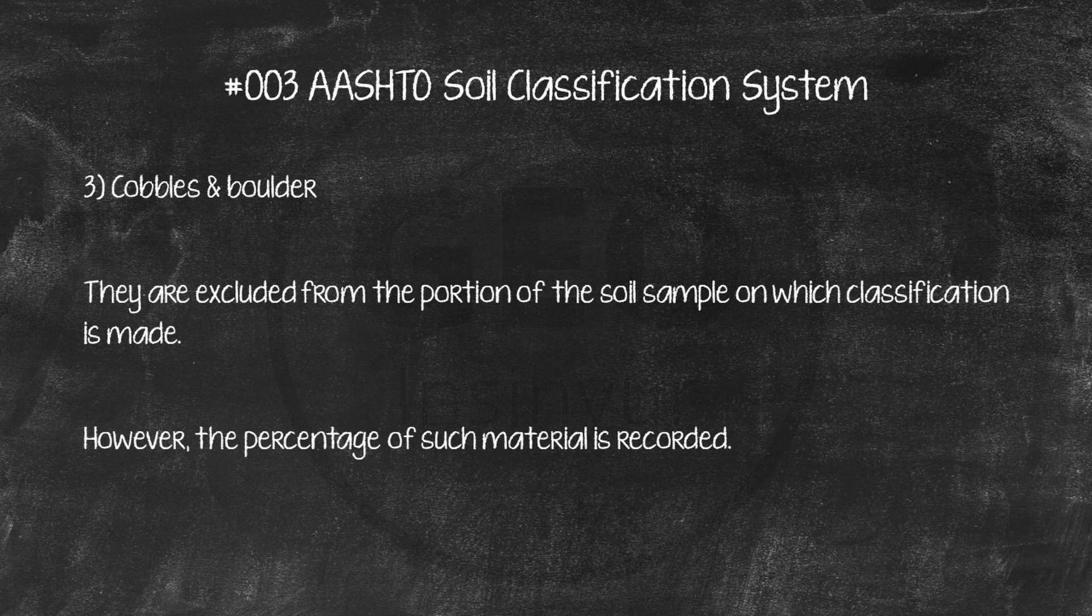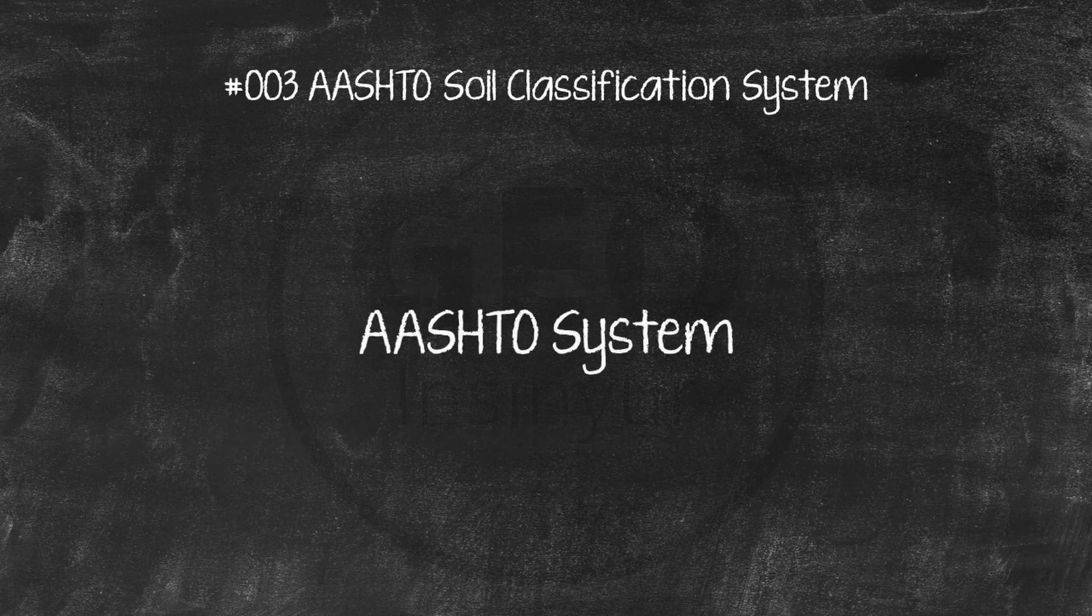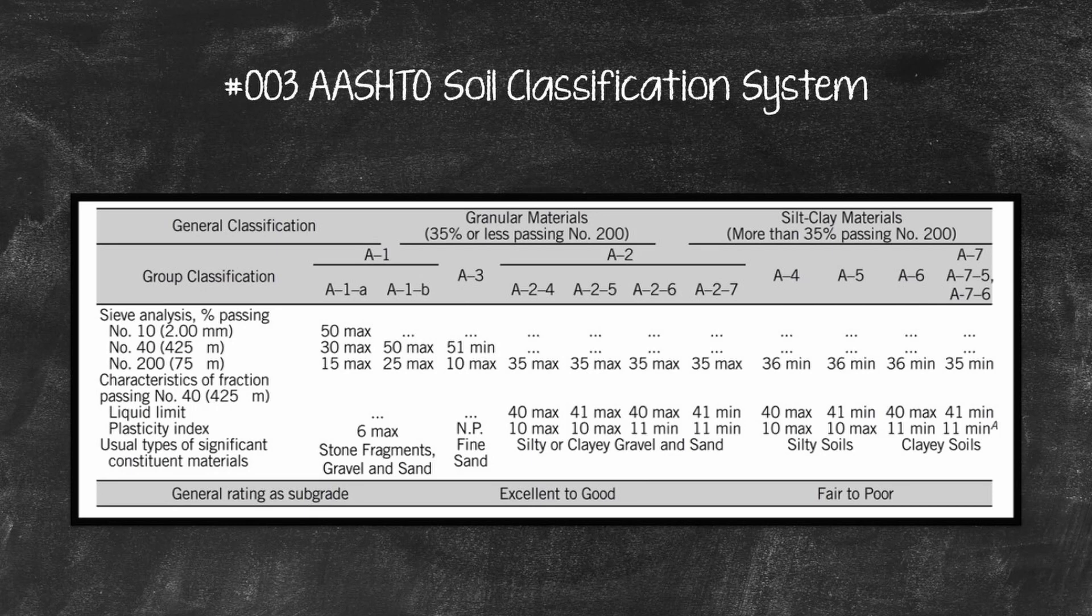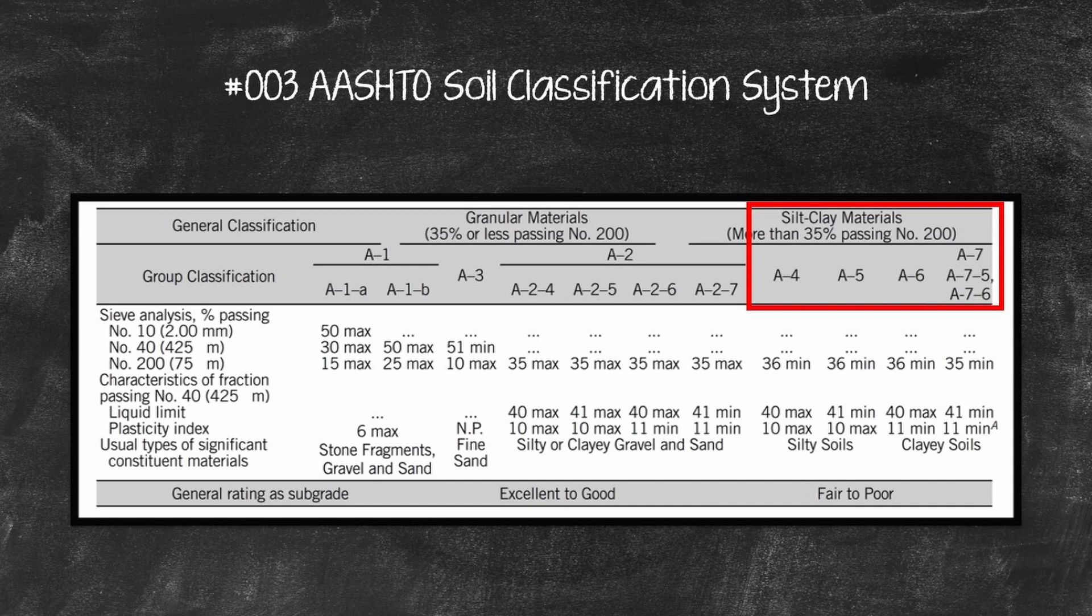The AASHTO System classifies soils into seven major groups, A1 through A7. The first three groups, A1 through A3, are granular, coarse-grained soils, while the last four groups, A4 through A7, are silt clay, fine-grained soils.